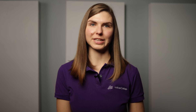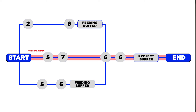Step two: identify and remove resource constraints that could put off the project deadline. Step three: at the end of the project, place a portion of the reduced time as a project buffer. Step four: insert a feeding buffer where the non-critical path and the critical path meet. Step five: place resource buffers to protect the critical chain. Step six: a project manager will insert the capacity buffers.